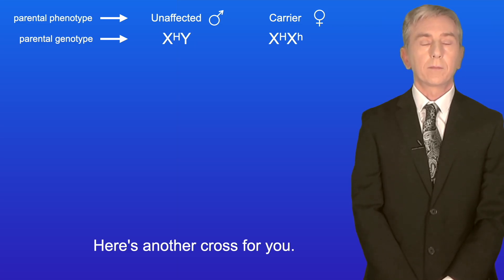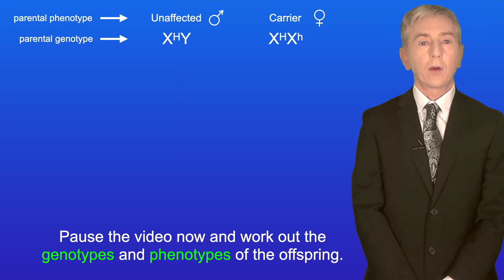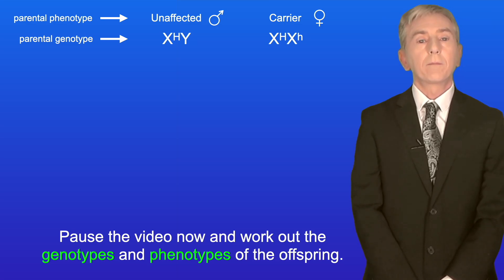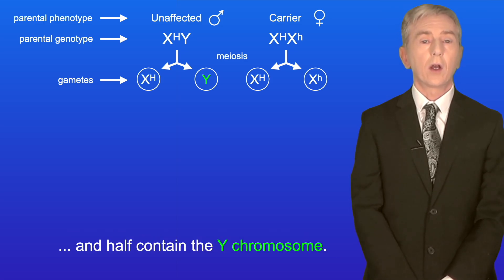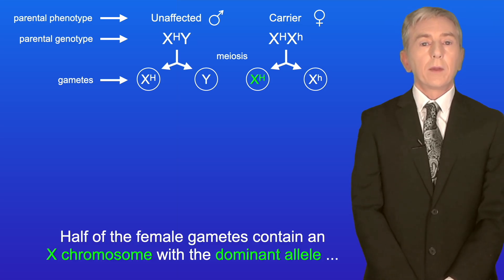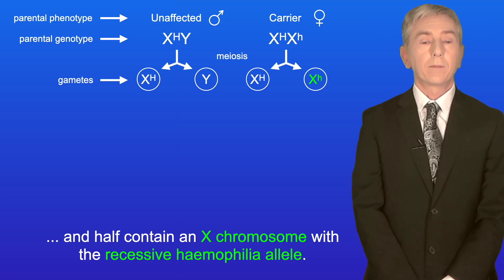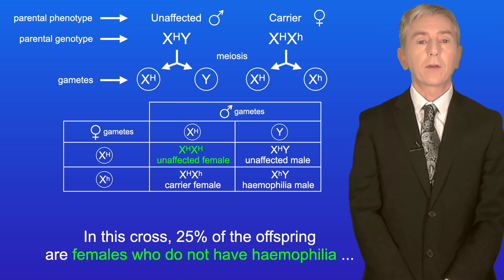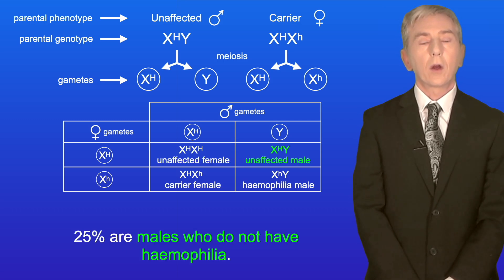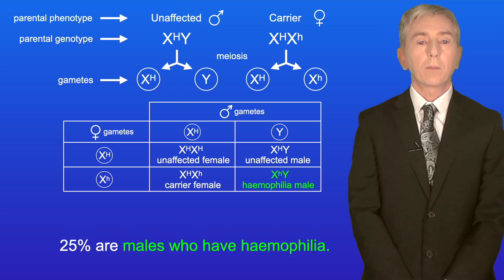Here's another cross: a male who does not have haemophilia and a female who is a carrier. Half of the male gametes contain an X chromosome with the dominant allele, and half contain the Y chromosome. Half of the female gametes contain an X chromosome with the dominant allele, and half contain an X chromosome with the recessive haemophilia allele. In this cross, 25% of the offspring are females who do not have haemophilia and are not carriers, 25% are males who do not have haemophilia, 25% are females who are carriers of the recessive haemophilia allele, and 25% are males who have haemophilia.